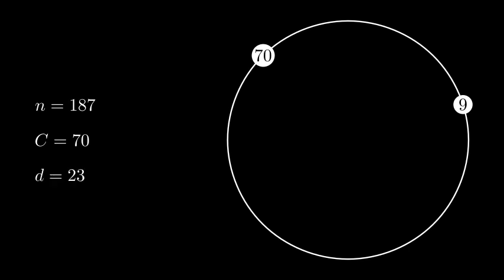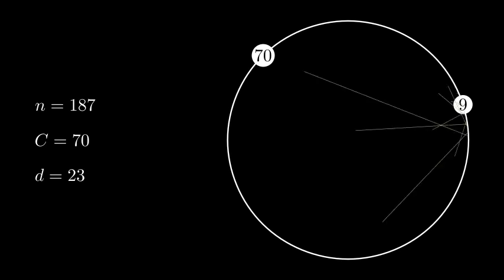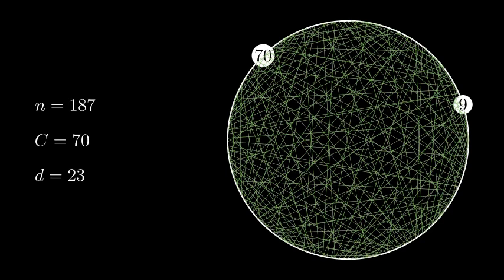It turns out they just need to multiply the ciphertext value, c, by itself a different number of times. In other words, we choose a new exponent, which we'll call d. In this case, we need a d value of 23.